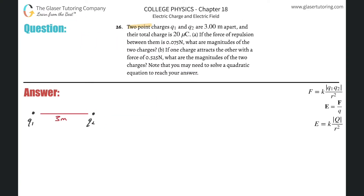Number 26. Two point charges Q1 and Q2 are three meters apart and their total charge is 20 micro coulombs. If the force of repulsion between them is 0.075 newtons, what are the magnitudes of the two charges? We have two charges Q1 and Q2 — we don't know their exact values. We know they're separated by three meters and the total charge is 20 micro coulombs.